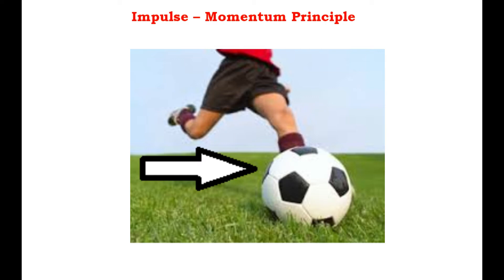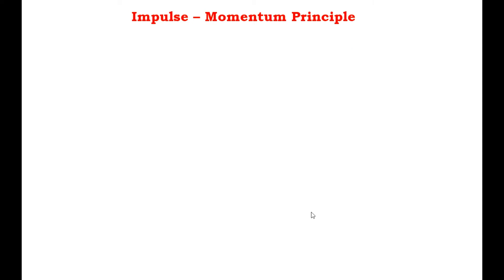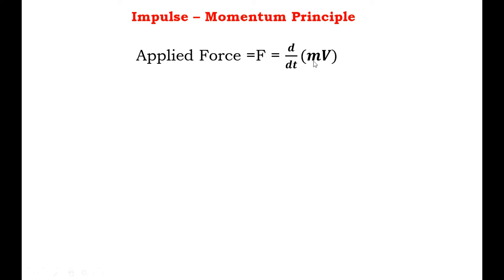Impulse of a force is a vector quantity given by the product of the magnitude of force and its time of action. So the applied force F is equal to d/dt of the product of mass into velocity, that is M into V. On differentiating this equation we get F is equal to M·(dV/dt) plus V·(dM/dt).